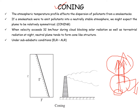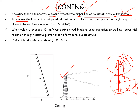Let us discuss the first one, that is the conic type of plume. The atmospheric temperature profile affects the dispersion of pollutants from the smoke stacks — this is the chimney from the industry. If a smoke stack emits pollutants into a neutrally stable atmosphere, we might expect the plume to be relatively symmetrical. Under neutral as well as stable atmosphere, we will see a conic type of plume.